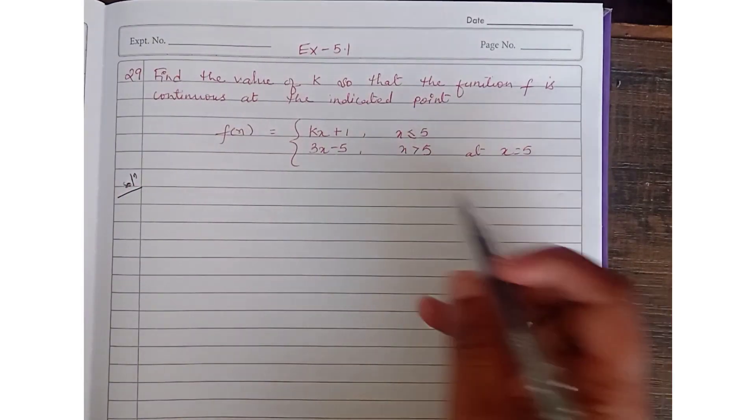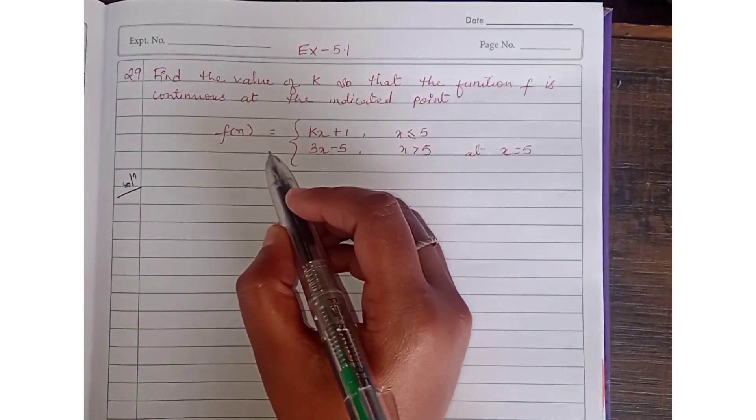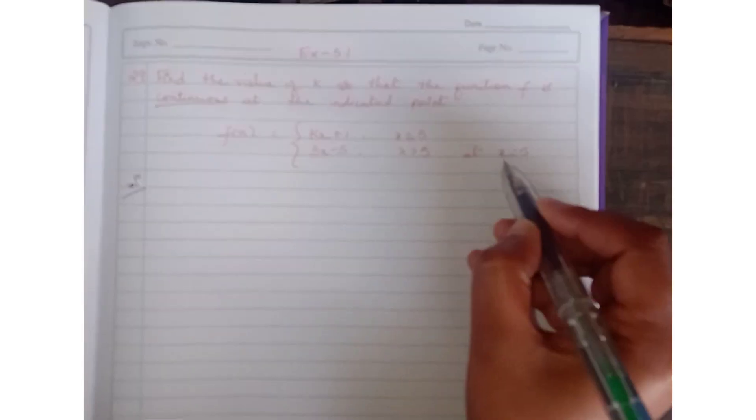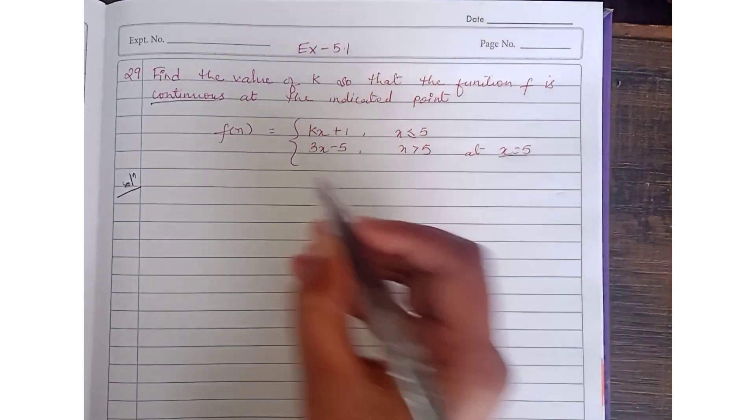Continuous - what is the condition? LHL equals RHL. We have to find the value of k, so we will first find LHL.